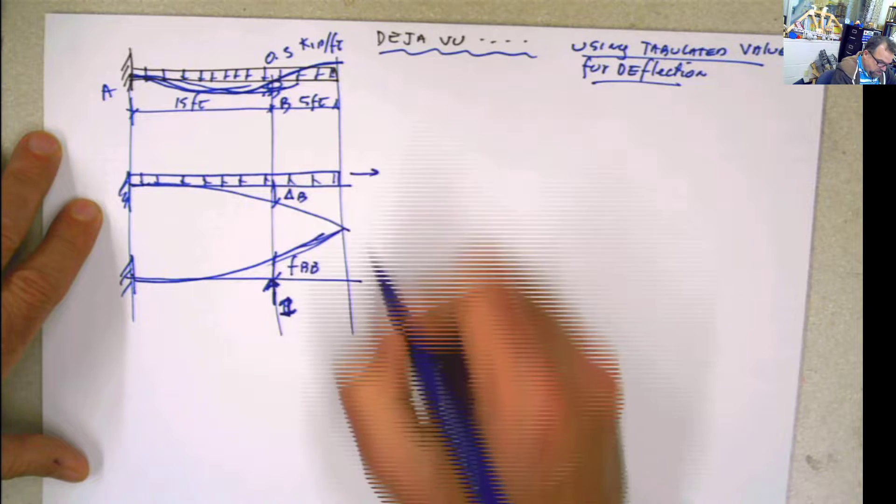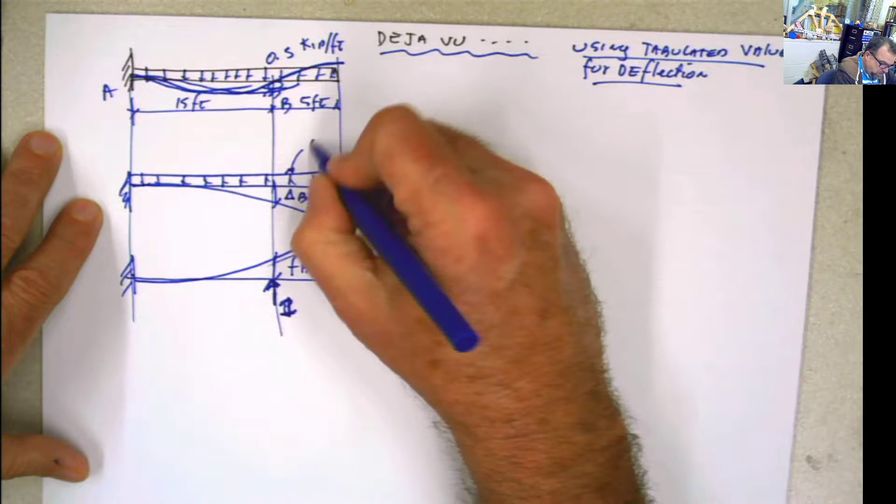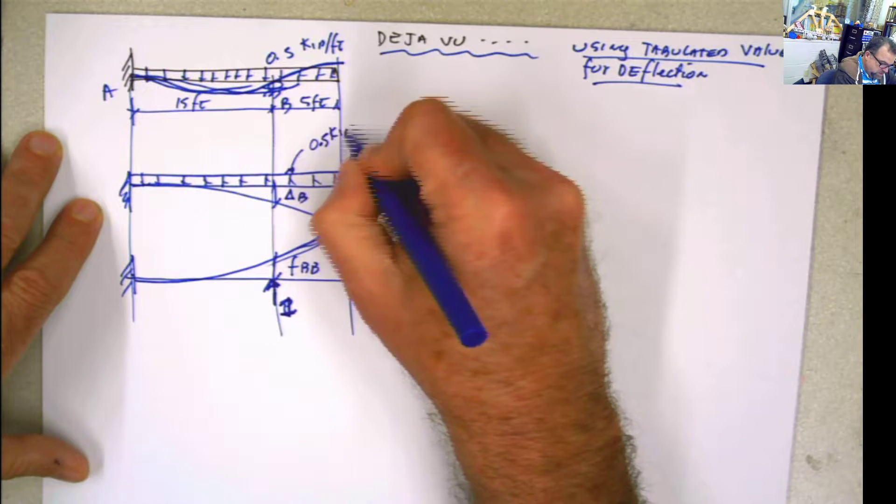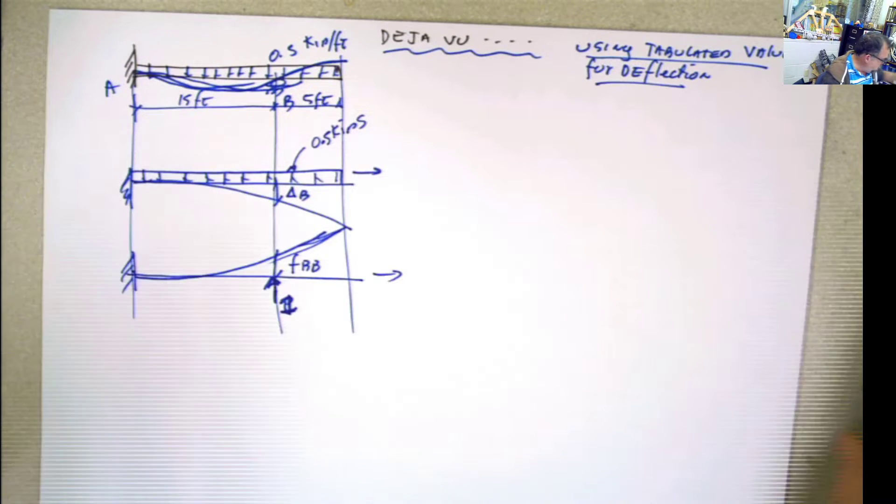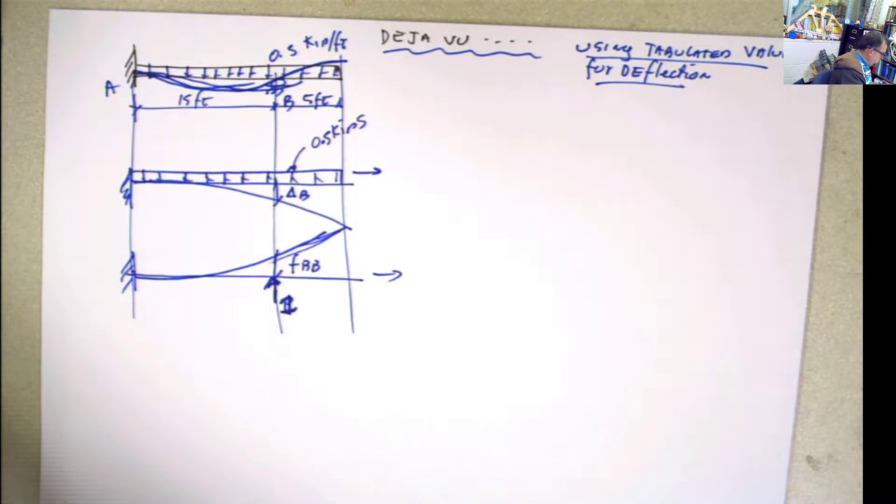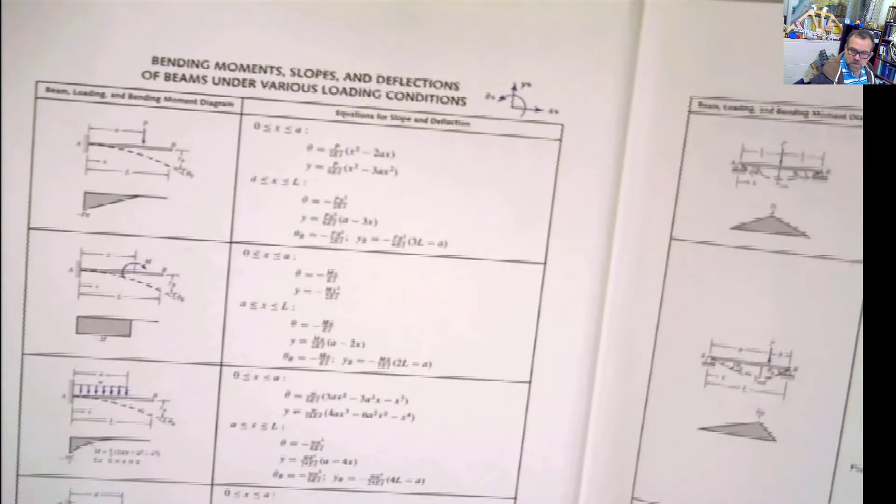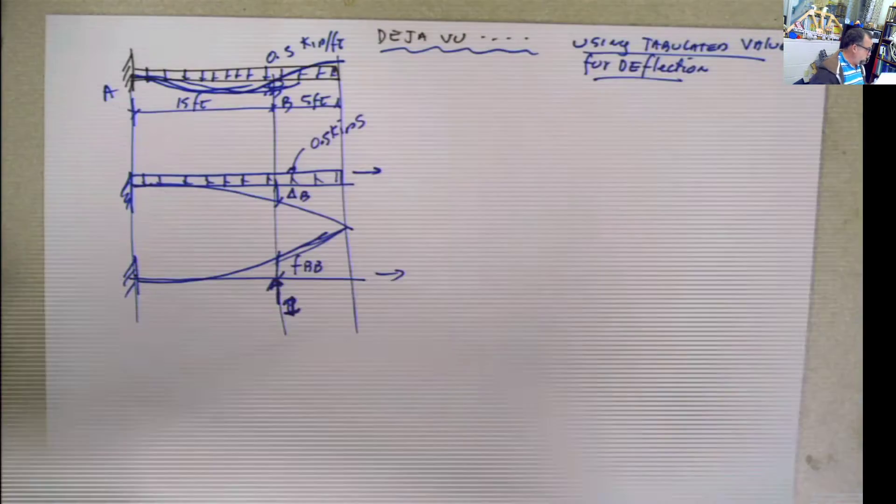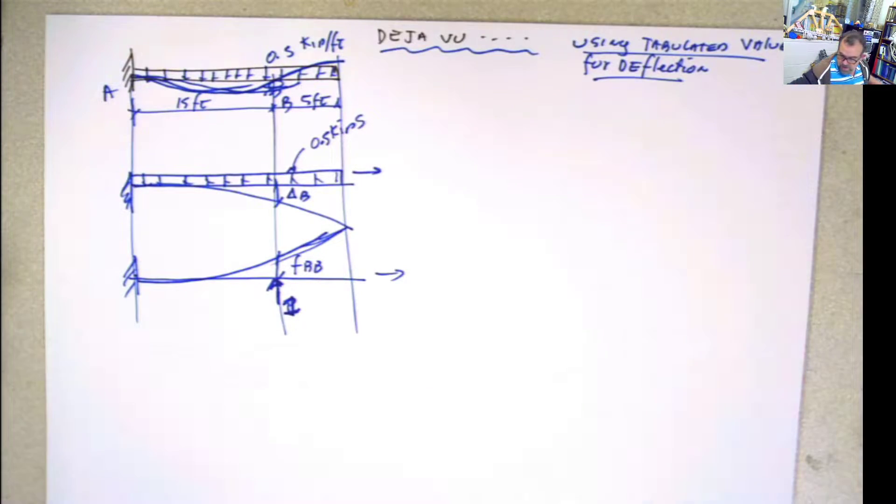Now, these values are really easy to compute using the tables. What tables do you mean? Well, the tables that you have in the back of the books. You see? In the books here, every structural analysis book, you have these type of tables for every one of the cases that you have.